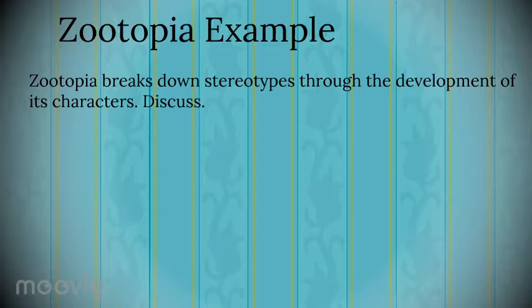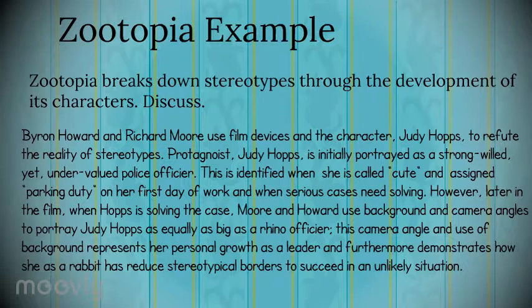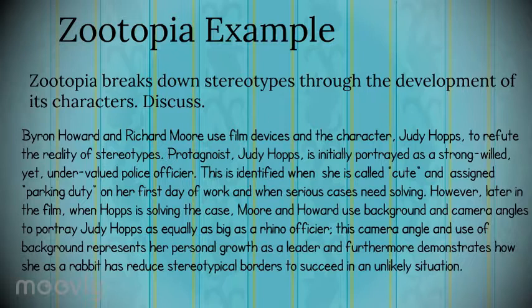Byron Howard and Richard Moore use film devices and the character Judy Hopp to refute the reality of stereotypes. Protagonist Judy Hopp is initially portrayed as a strong-willed yet undervalued police officer. This is identified when she is called cute and assigned parking duty on her first day of work when a serious case needs solving. However, later in the film, when Hopp is solving the case, Moore and Howard use background and camera angles to portray Judy Hopp as equally as big as a rhino officer. This camera angle and the use of background represents her personal growth as a leader and furthermore demonstrates how she, as a rabbit, has reduced stereotypical borders to succeed in an unlikely situation.